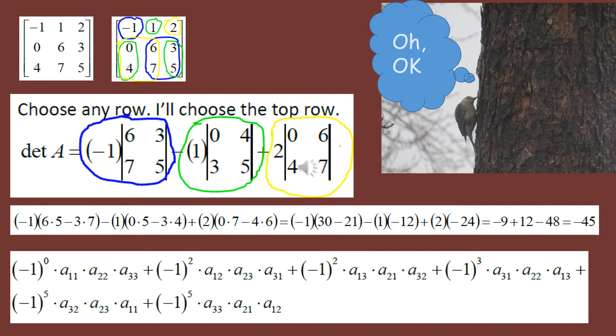If you really wanted to, you could pause the screen and look at all the subscripts at the bottom of the slide and pair them up with the calculations we did. You would see that we obtained every one of the calculations in the definition and obtained our determinant of negative 45. By grouping it as we did, it's much easier to see what to do versus trying to follow the definition as written.